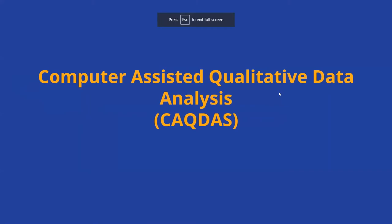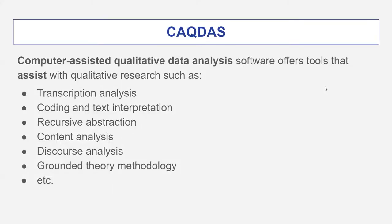I will speak about computer-assisted qualitative data analysis software. This software offers tools that assist with qualitative research, such as transcription analysis, coding and text interpretation, recursive instruction, content analysis, discourse analysis, and the methodology used, for example, in grounded theory. These are just some examples.